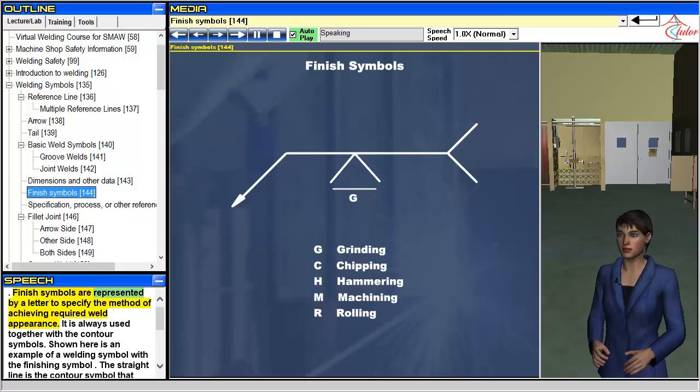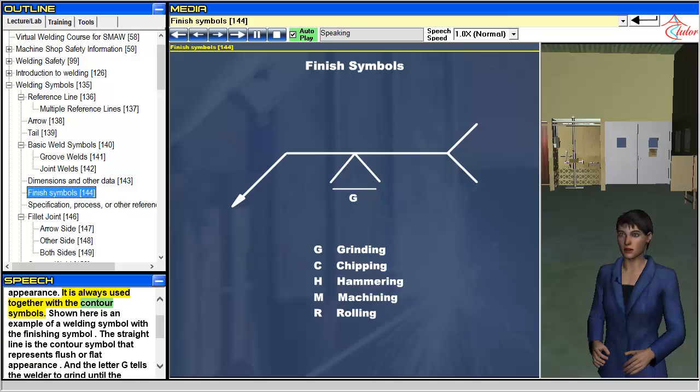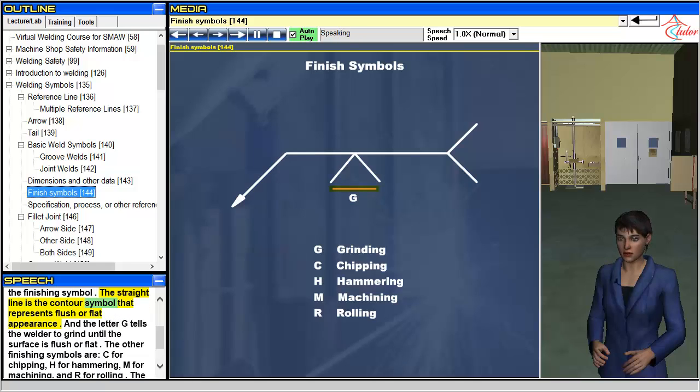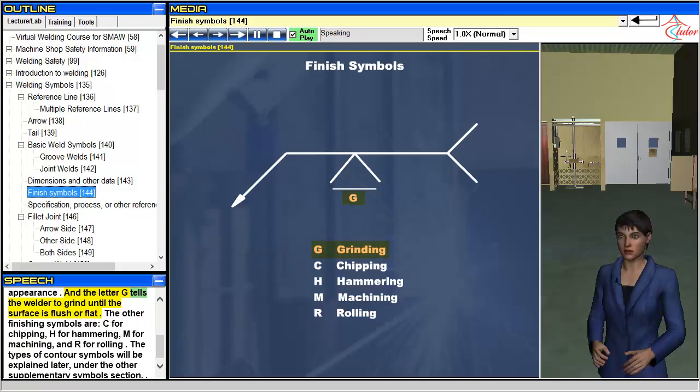Finish symbols are represented by a letter to specify the method of achieving required weld appearance. It is always used together with the contour symbols. Shown here is an example of a welding symbol with the finishing symbol. The straight line is the contour symbol that represents flush or flat appearance, and the letter G tells the welder to grind until the surface is flush or flat.